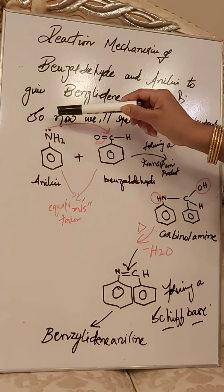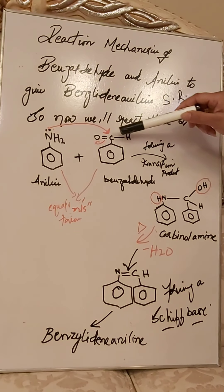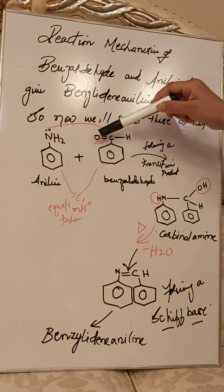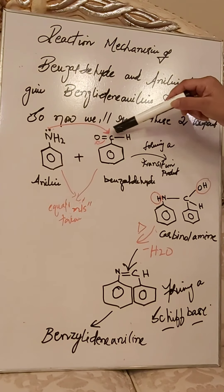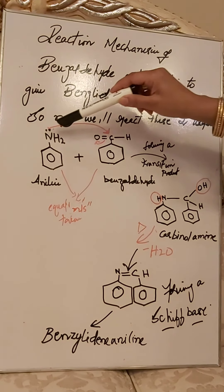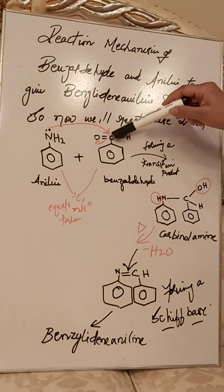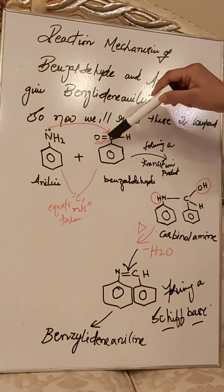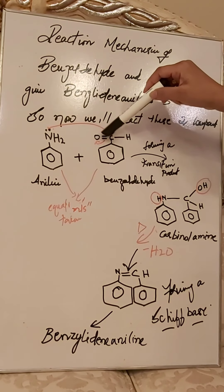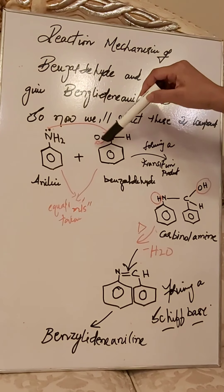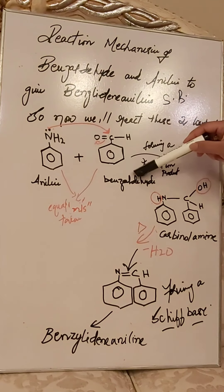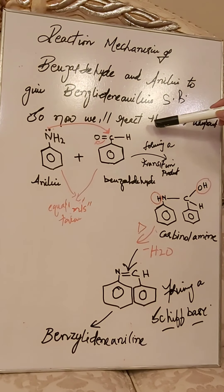The NH2 group of aniline has a lone pair on nitrogen. In benzaldehyde, the carbon is double bonded to oxygen — this C=O carbon is always electron-deficient. The lone pair of nitrogen will attack this electrophilic carbon, and as a result the electrons bonding carbon to oxygen will shift towards the oxygen.